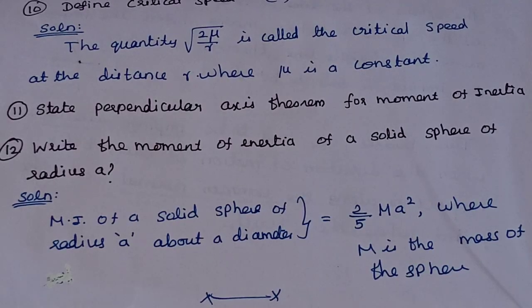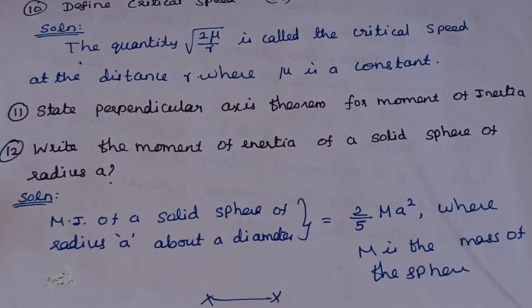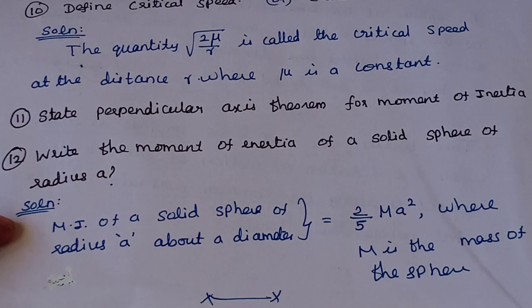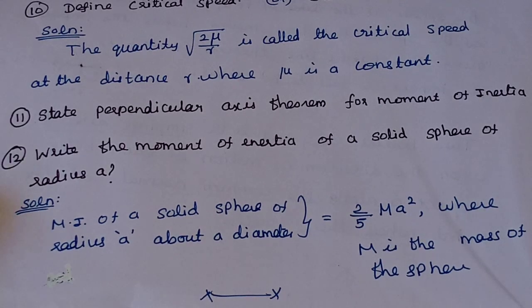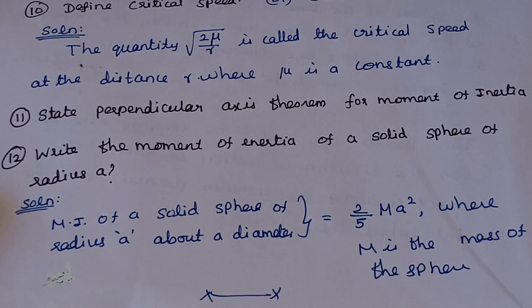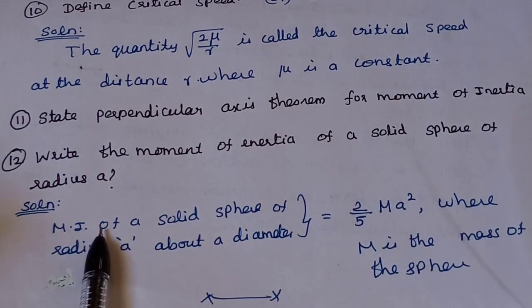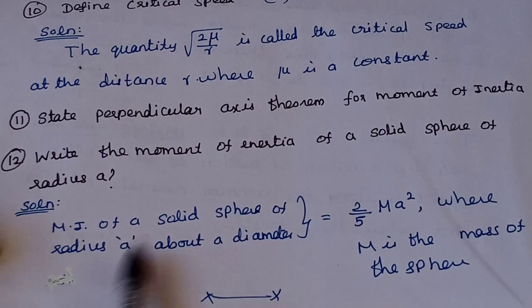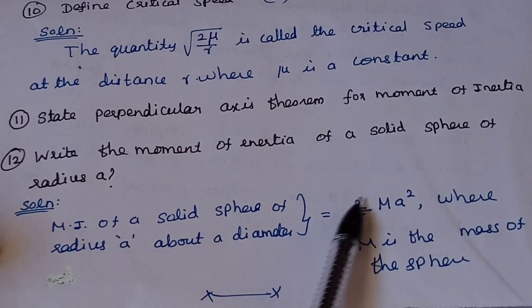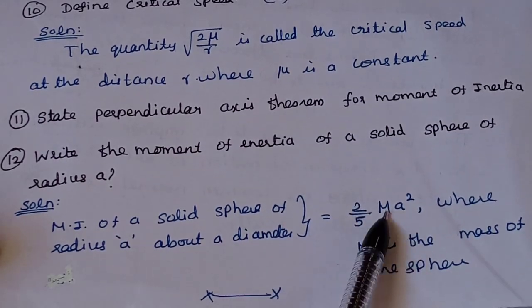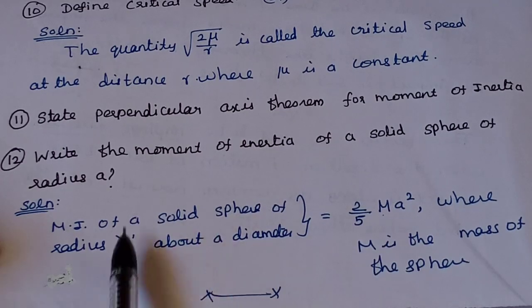The last 2-mark question: write the moment of inertia of a solid sphere of radius a about a diameter. The moment of inertia of a solid sphere of radius a about a diameter equals (2/5)·m·a².